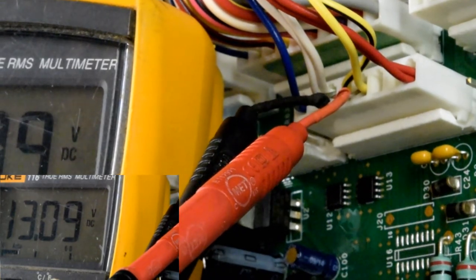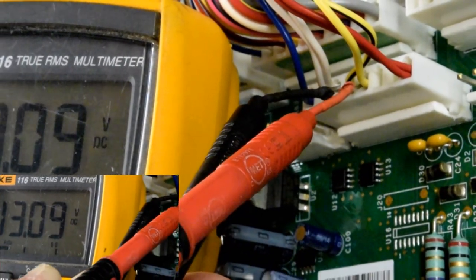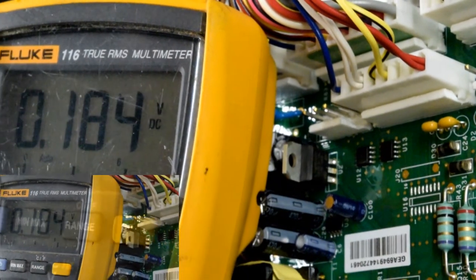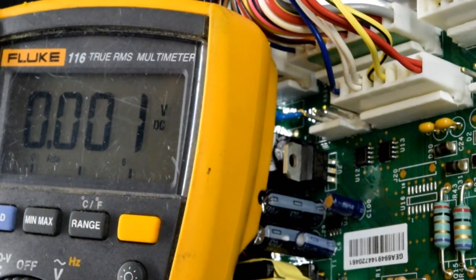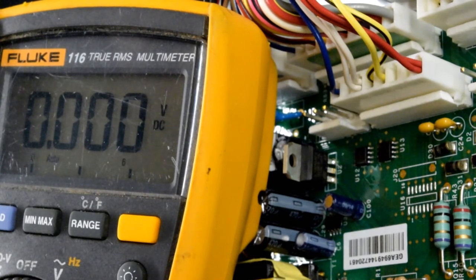If your fan motors are not currently running and you want to perform this test, leave either the refrigerator or the freezer door open for three minutes. This puts your board into what's called linear protection, and it'll run both fan motors for you.